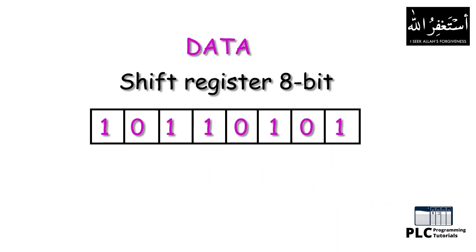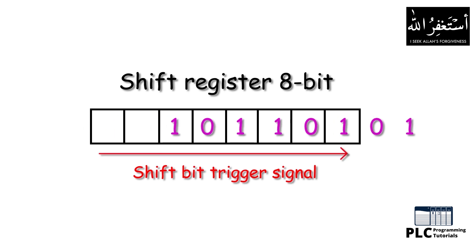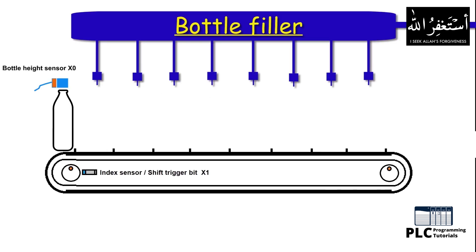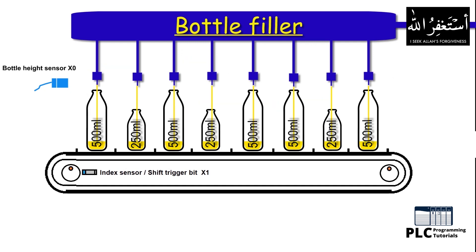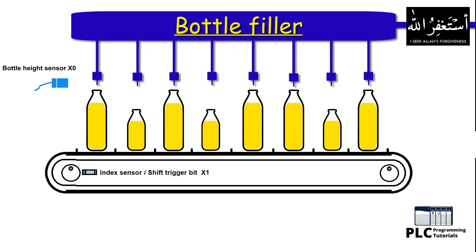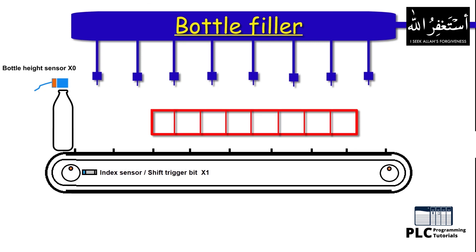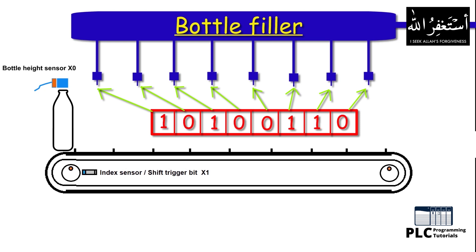So far we have learned that a shift register has some data inside it and it is shifted or rotated across the register each time the shift instruction is triggered. Now let's see an example so we can understand how to use a shift register to execute complicated tasks in an easier way. Here we have a bottle filler with eight filling nozzles, and this filler will be filling two different size bottles — 250 ml and 500 ml. We can imagine these eight filling positions as the eight data bits of the shift register, with data bits inside it corresponding to the size of the bottle under each filling nozzle.